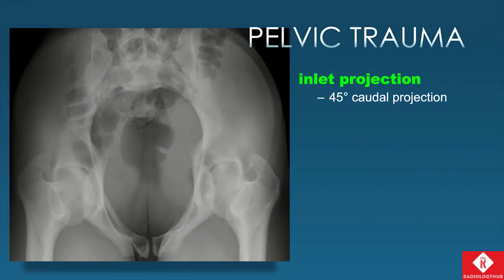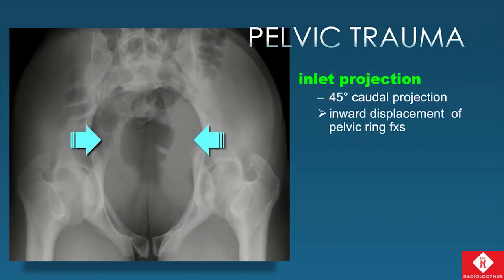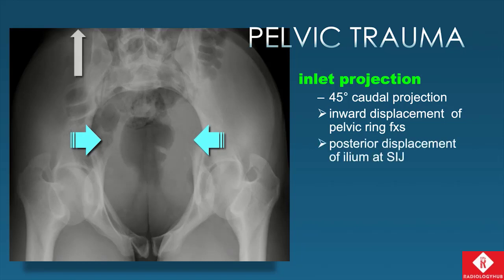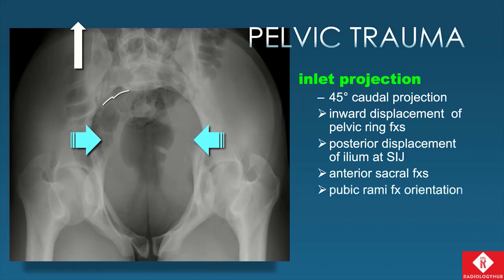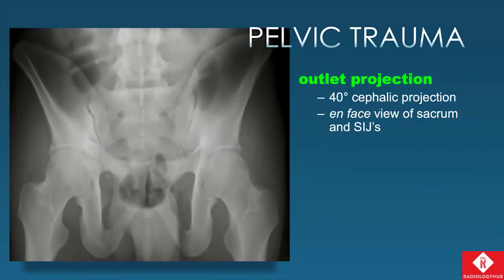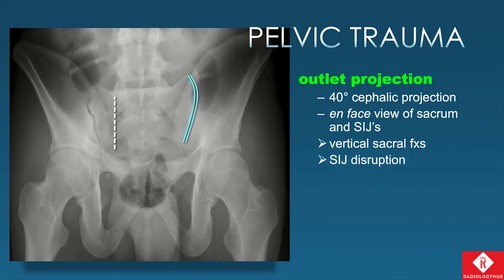The inlet projection is done at around a 45-degree caudal projection. You can see inward or medial displacement of pelvic ring fractures, posterior displacement of the iliac bone relative to the sacrum at the SI joint, and crush fractures and buckling of the anterior sacral wall. We can also see the orientation of pubic rami fractures to suggest whether these are anterior or lateral compression type injuries. The outlet view gives an en-face view of the sacrum and anterior SI joints, allowing us to look for vertical sacral fractures and vertical displacement of one hemipelvis relative to the other.